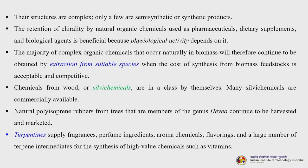The majority of complex organic chemicals occurring naturally in biomass will therefore continue to be obtained by extraction of suitable species. Cost is a very important factor when going for commercial production. Silvy chemicals from wood are in a class by themselves. Natural polyisoprene rubber from trees of the genus Hevea continues to be harvested and marketed at large scale. Turpentine supplies fragrances, perfume ingredients, aroma chemicals, flavorings and intermediates for synthesis of high value chemicals such as vitamins.